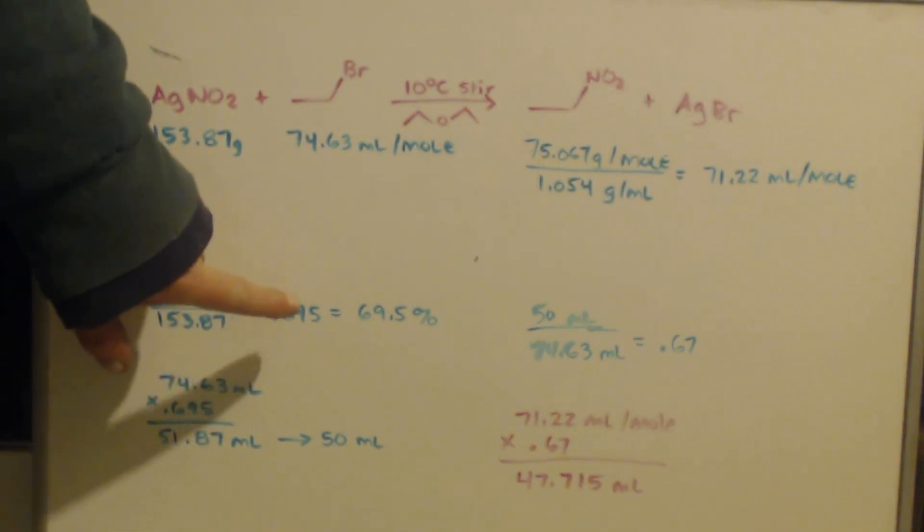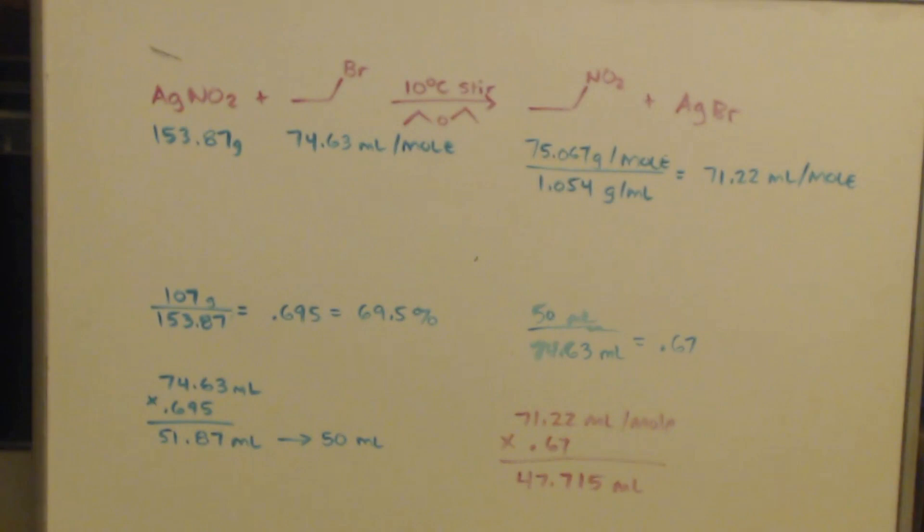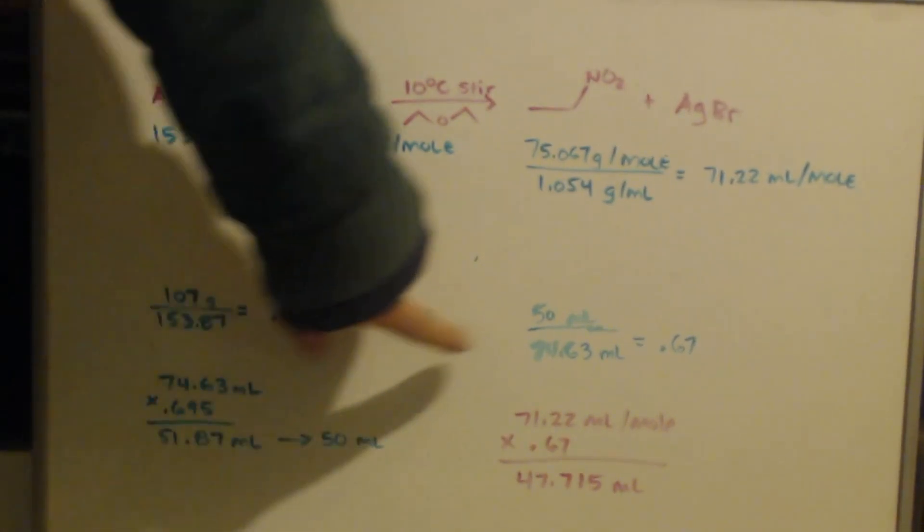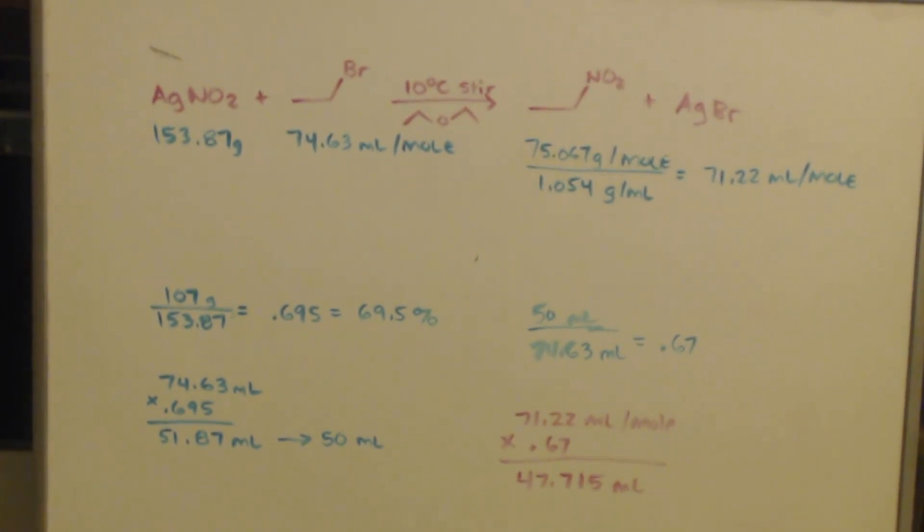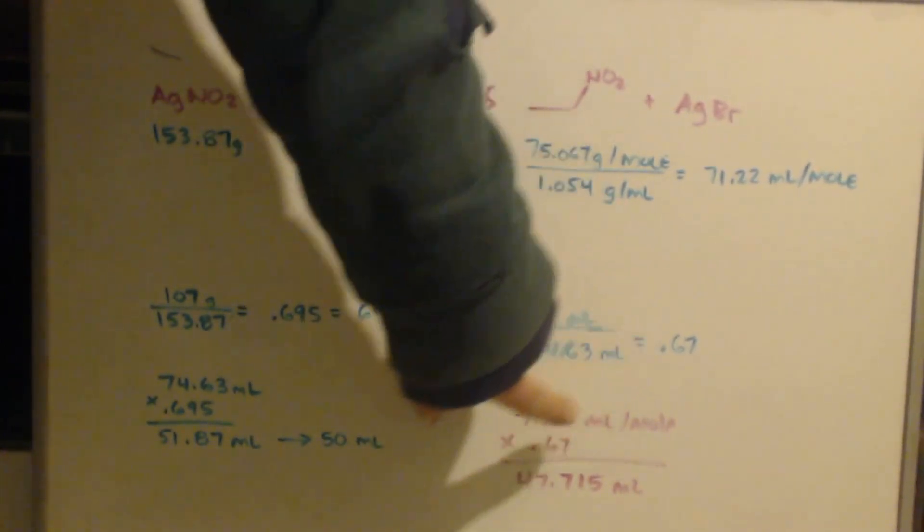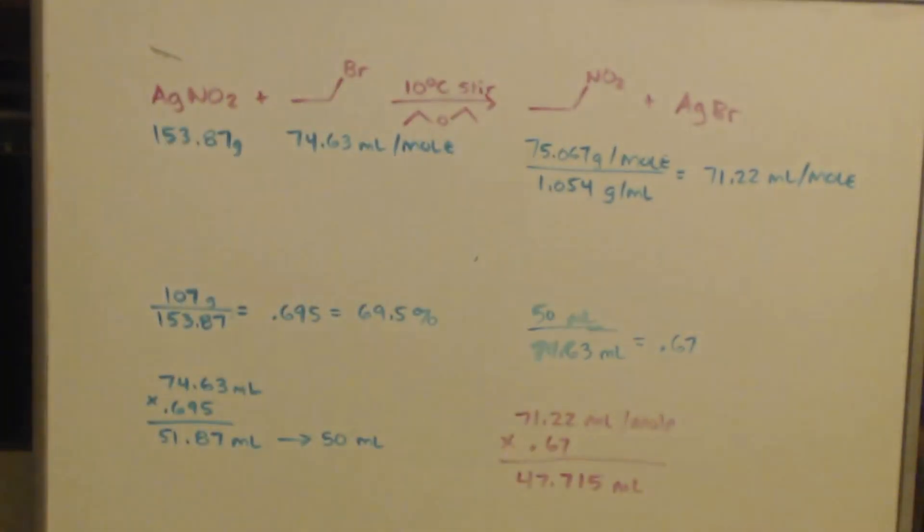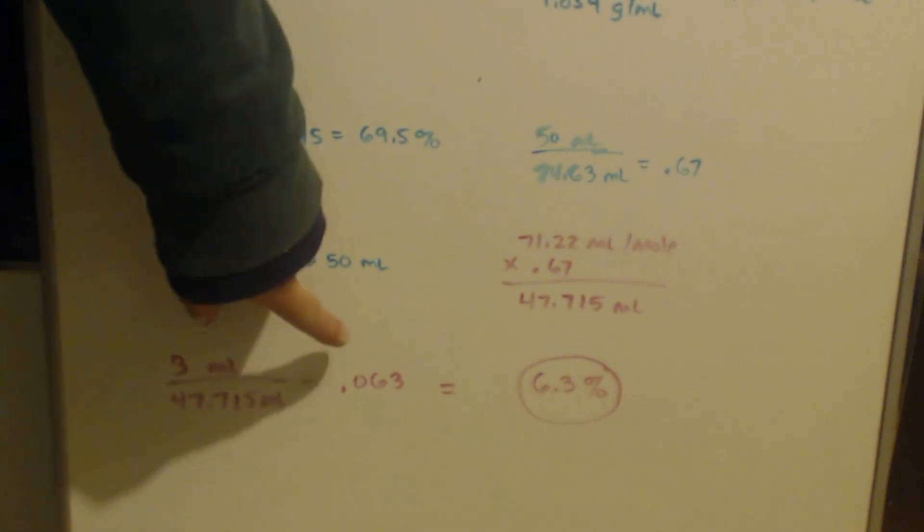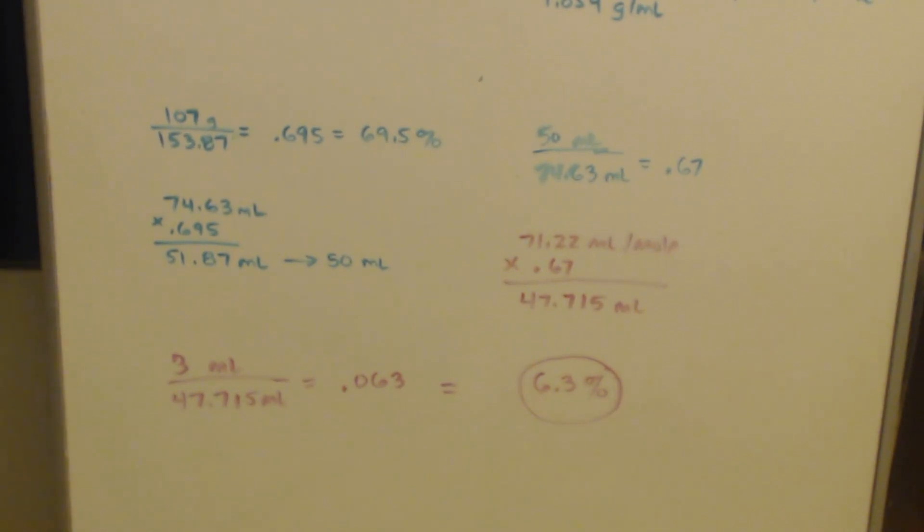And to do that, I needed more of the nitrite than ethyl bromide. So I used 50 milliliters. So I divide that by the molar volume of ethyl bromide. And I find out that's 67% of a mole. That's my limiting reagent is the ethyl bromide. So that's how I'll figure out my yield. I use 67% of a mole. Well, here's how much a mole is of nitroethane. That's its molar volume. So I multiply that by 0.67. And I get 47.715 milliliters. Now that is my theoretical yield. If I would have got 100%, I would have got 47.7 milliliters. I got 3 milliliters. That's sad. So I divide it by my theoretical yield. And I get 0.063. That converts to 6.3%. That was my yield.